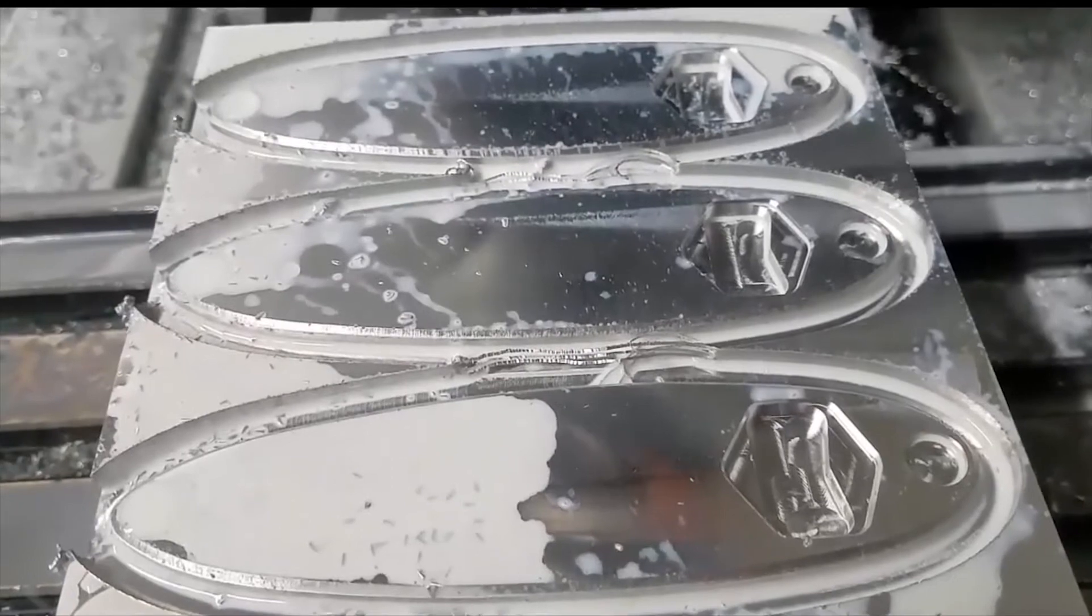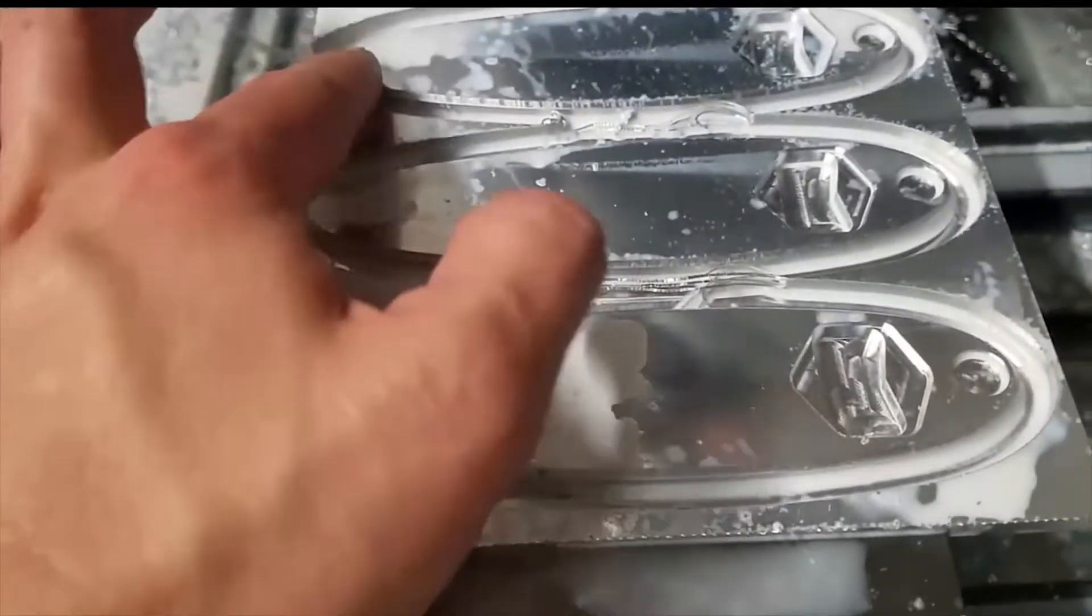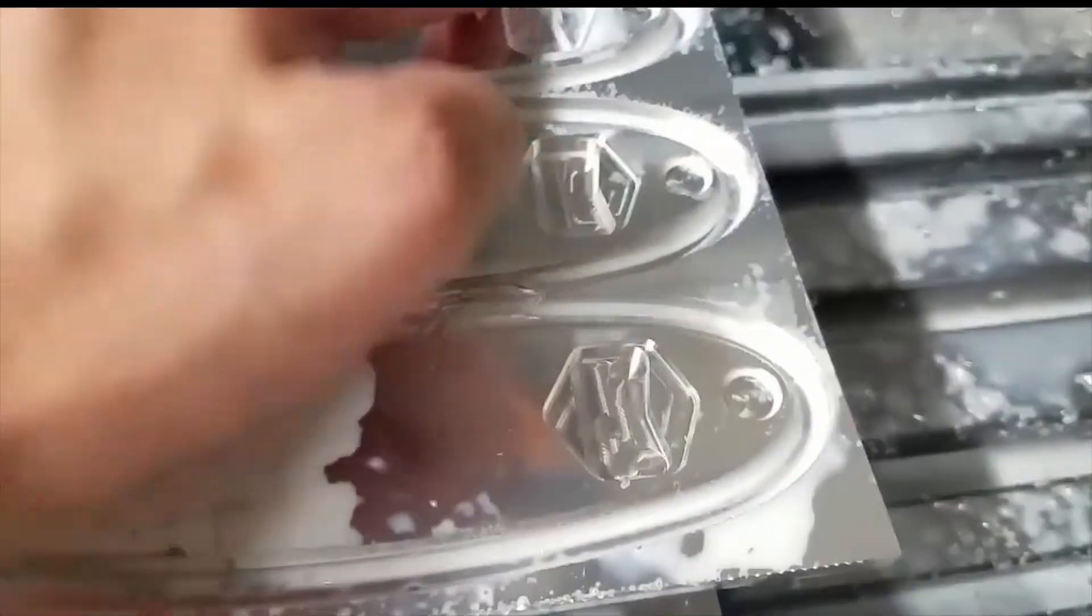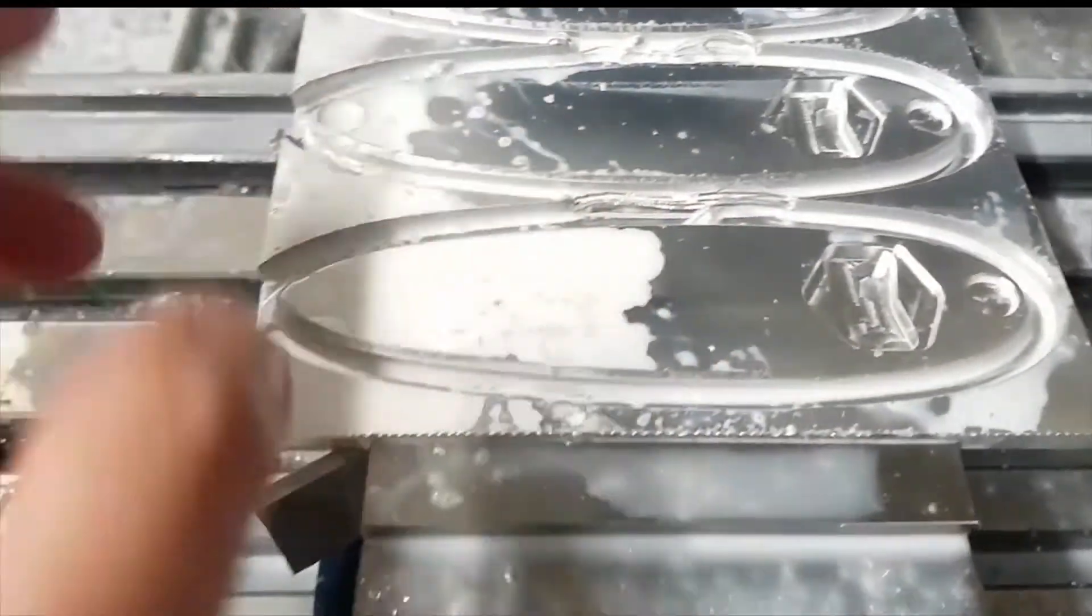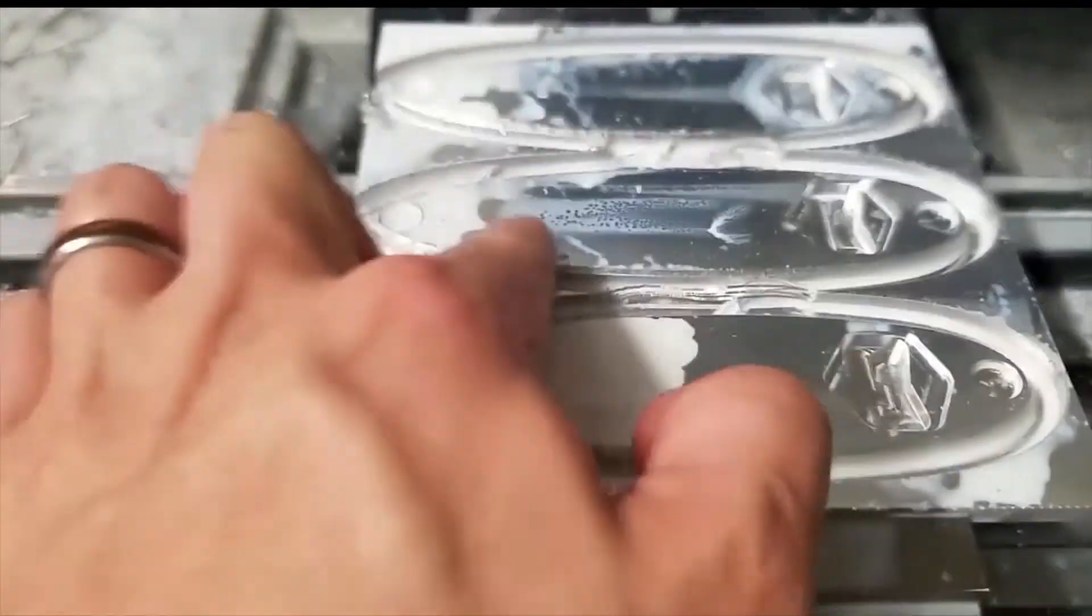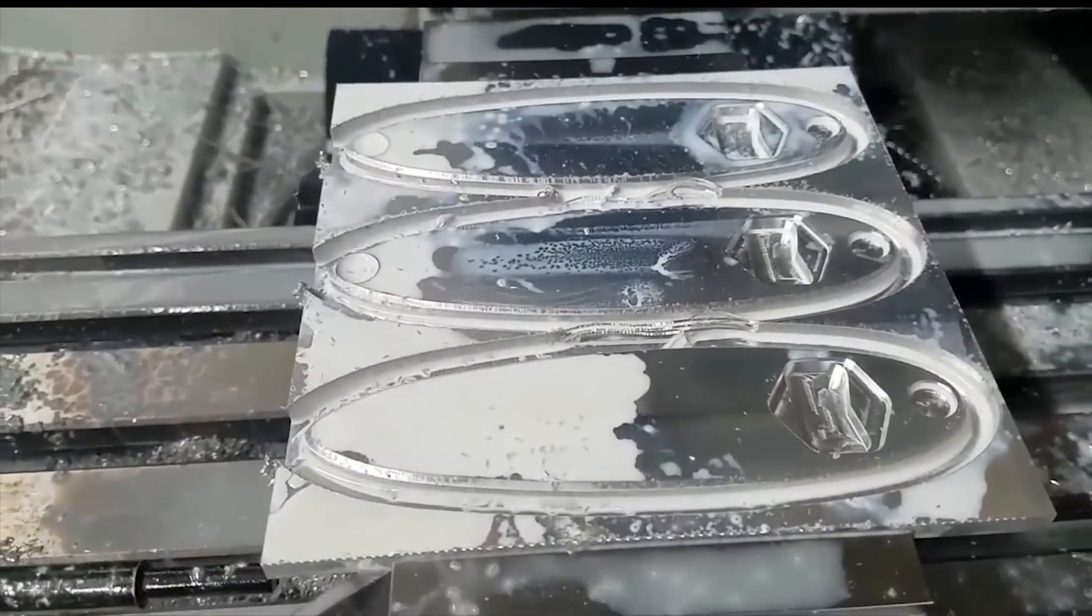All right, now the countersink has done the deburr on the edges and then also done the deburr on the inside of the Go Engineer logo. And now we're going to put the text in on the top of the board.